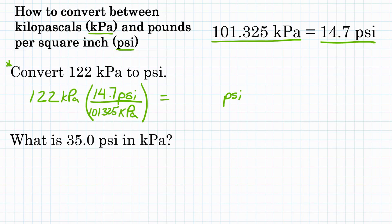So now our problem is set up. Let's look at our units first. We should see that kPa is on top to start and on bottom of our conversion factor. So they will cancel out, and we will be left with the unit of PSI. Okay, now we can plug this in our calculator and do the math.